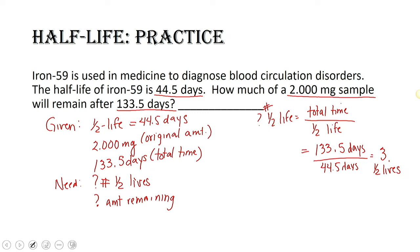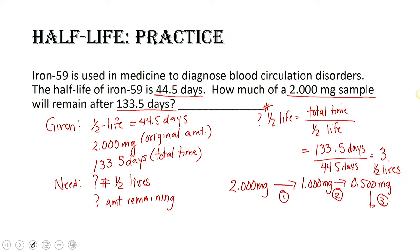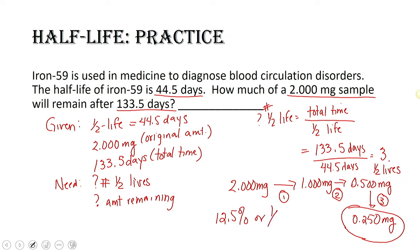Now that we know we have three half-lives, we can determine what our amount is. Starting with 2.00 milligrams, after one half-life we have 1.000 milligrams; after two half-lives we have 0.500 milligrams; and after our third half-life we end up with 0.250 milligrams. What percentage is that of the original amount? After three half-lives, it's 12.5%, or one-eighth, remaining.